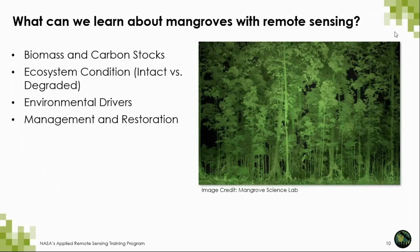Finally, mangroves are also important for carbon sequestration, as they are able to absorb large amounts of carbon from the atmosphere and store large amounts of carbon both in their trunks and in the thick layer of soil that they grow on and accrete. What can we learn about mangroves by using remote sensing? We've been working on better understanding mangrove biomass and carbon stocks on local to global scales, ecosystem condition, environmental drivers, and using remote sensing for the management and restoration of mangrove forests worldwide.